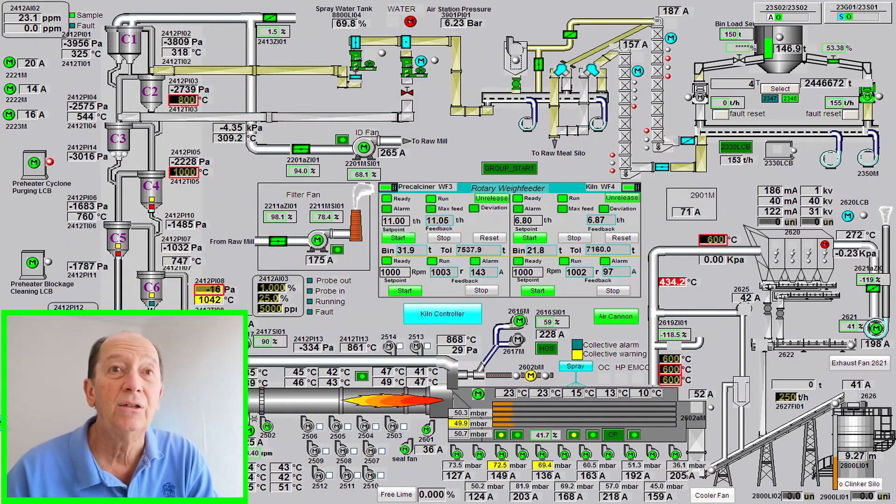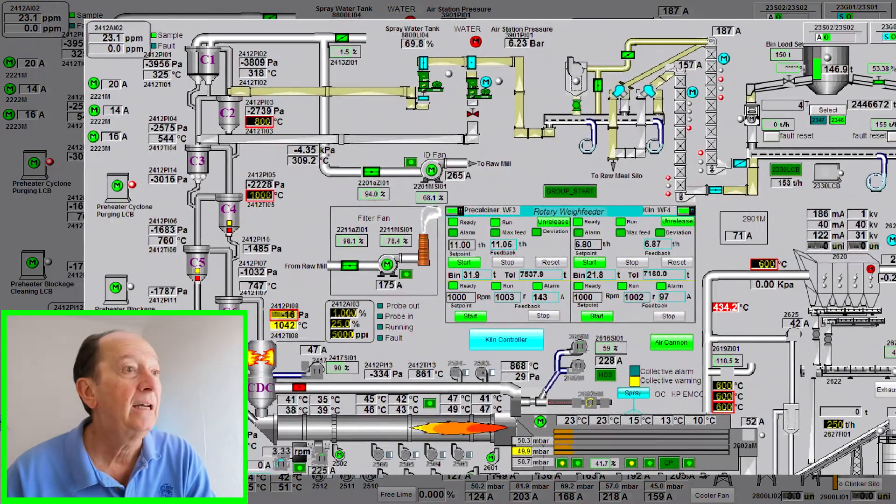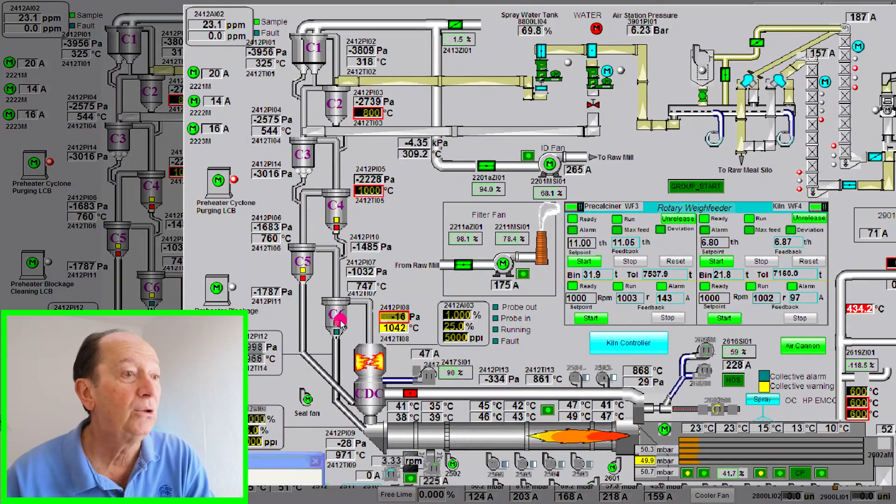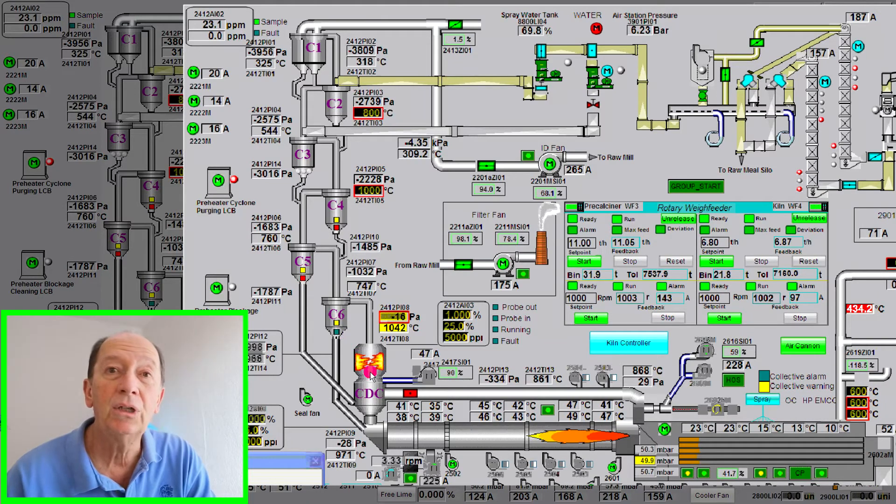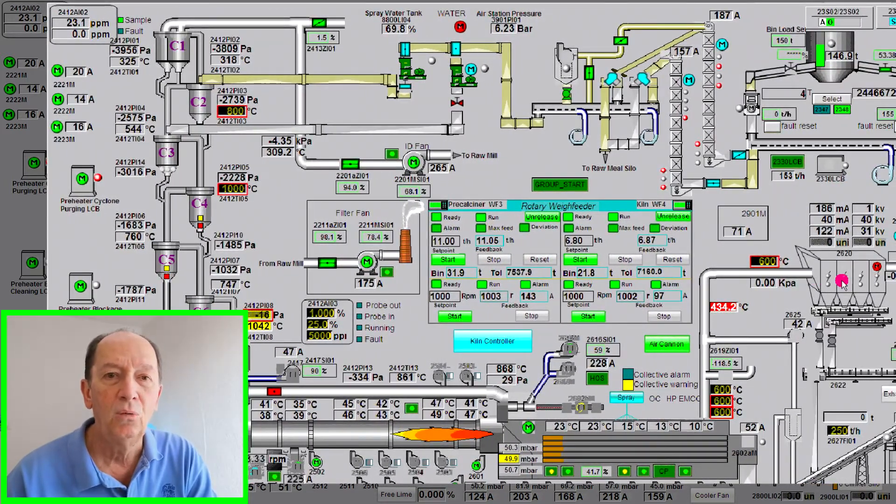So this is the kiln system, 3000 tons per day kiln, with a single string preheater, six stage preheater tower, with a precalciner, the kiln tube, tertiary duct and an IKN type clinker cooler with the venting system.